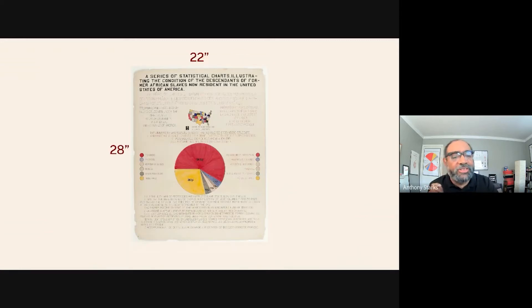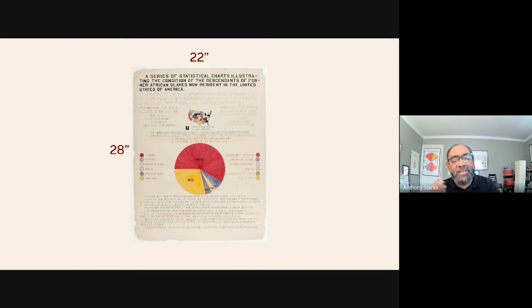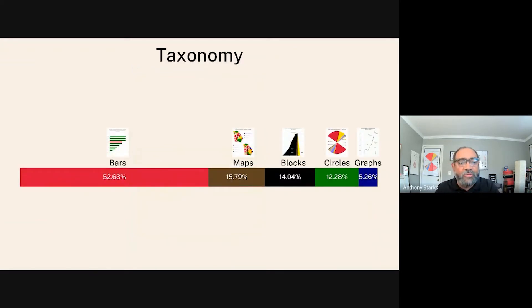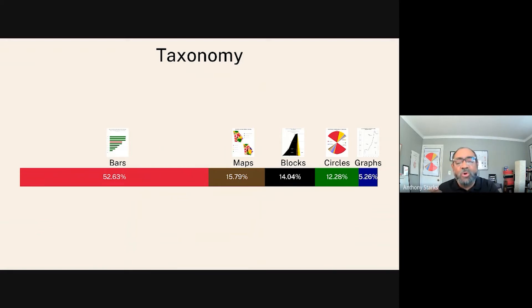It's interesting that these were poster-size visualizations — 22 by 28 inches. The scale is very interesting to me; these were not just small things we see on the screen, but large posters. Let's go over the taxonomy of these visualizations. About 50% of them were bars, then about 15–16% were maps, then we have what we call blocks, then circles, and then graphs.